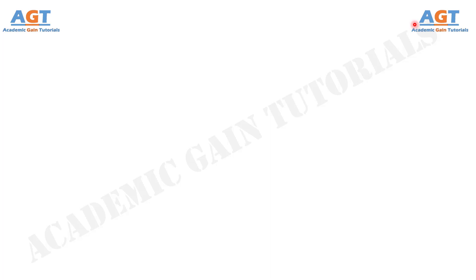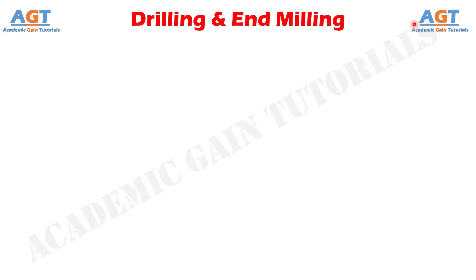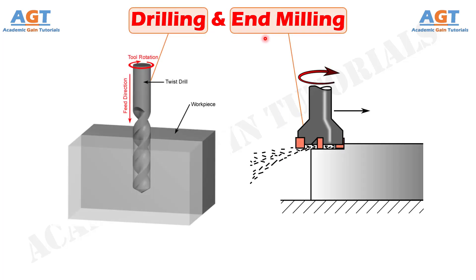Welcome to academic game tutorials. In this video, we will look into the differences between drilling and end milling. Machining is one type of manufacturing process where excess material is removed from the workpiece to impart intended shape, size and finish. Drilling is performed to originate a hole on solid surface using a cutting tool called drill.